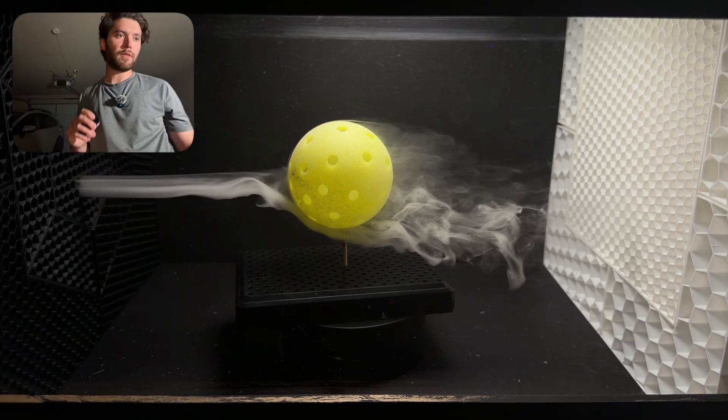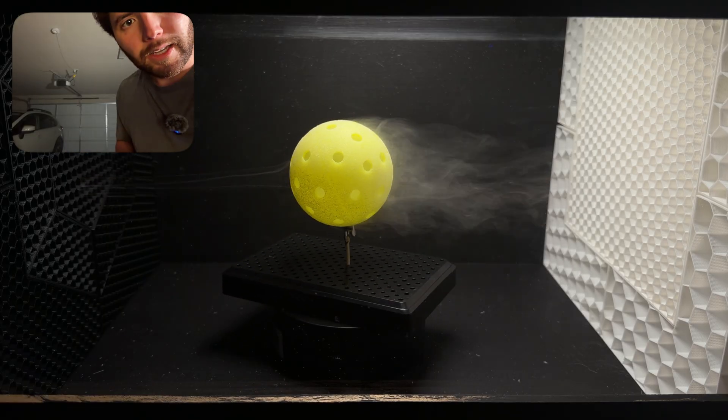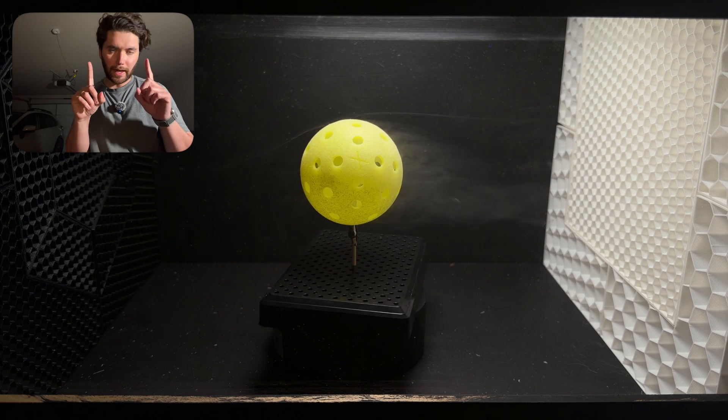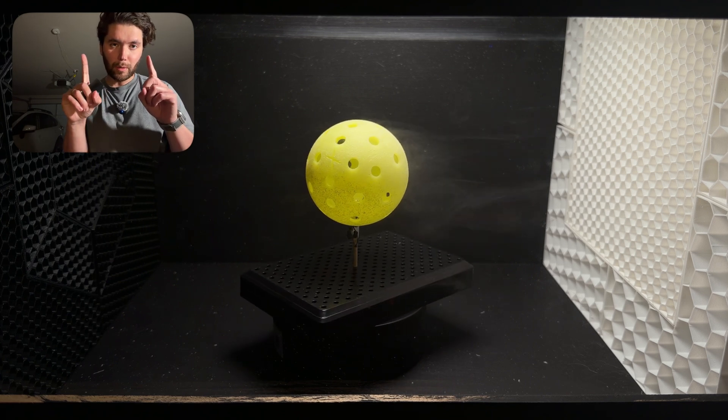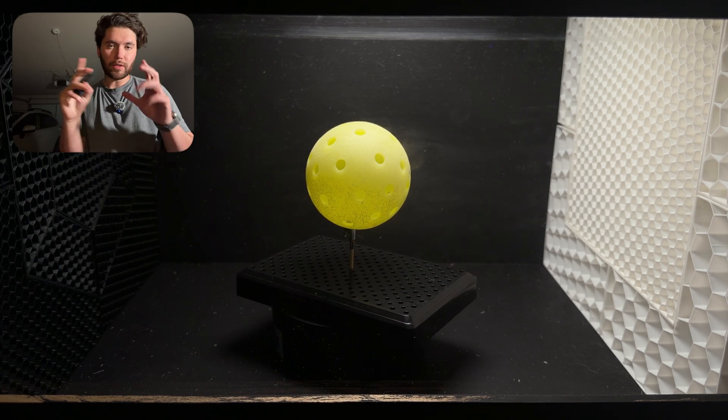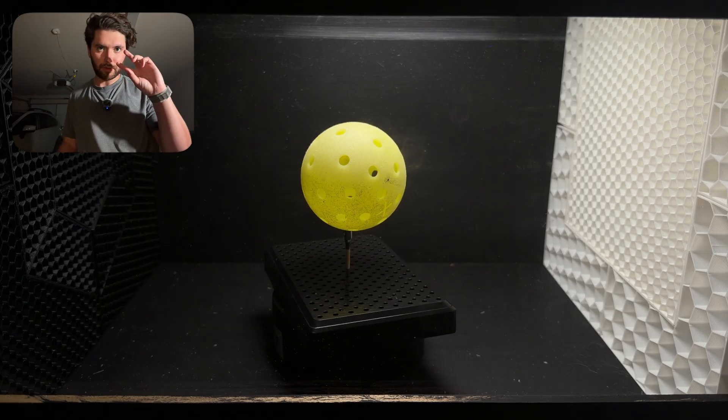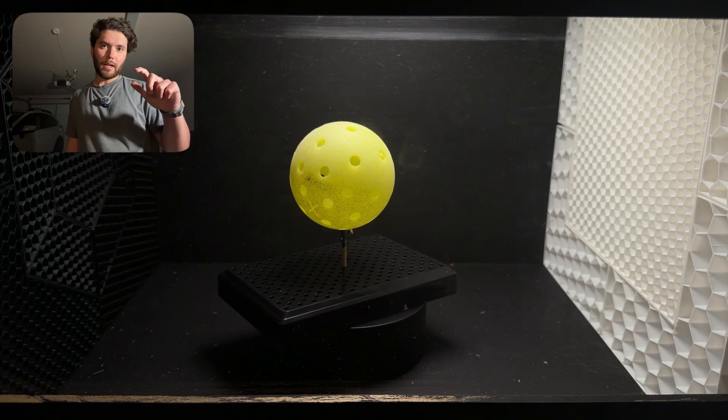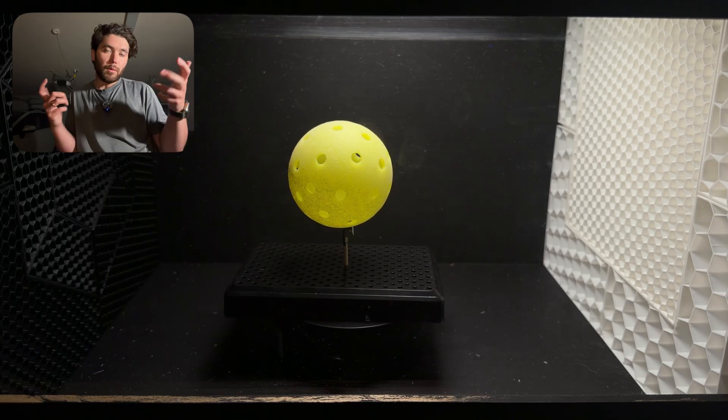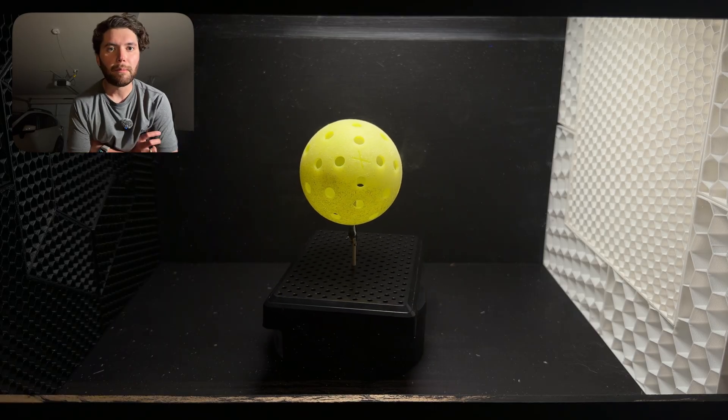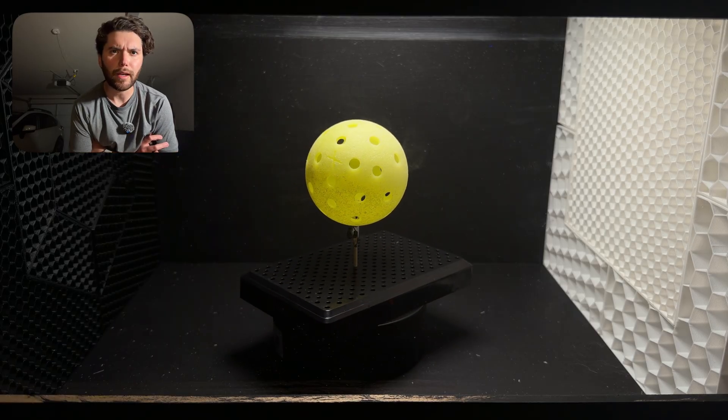Because what I would love to eventually see is for us to be able to visualize how the air changes. So for like a golf ball, for instance, what happens when the ball is spinning through the air? How is it gripping the air? I don't know. These are questions that I have that I want to figure out with real life stuff and not a computer simulation. But I want to try in real life.